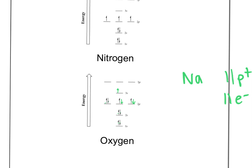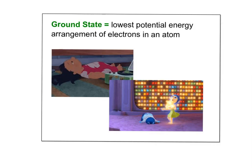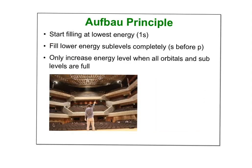Those are the ground states. When you fill from low to high, I didn't randomly put an electron up high — that would not be the ground state. At the bottom of these electron configuration and orbital diagram notes you have some vocab. The first one is ground state: the lowest potential energy arrangement for electrons. That's what we've been doing when we fill from low to high.